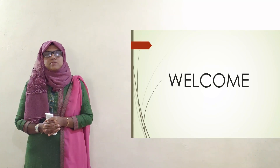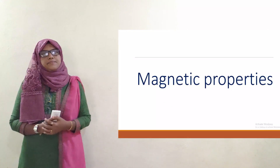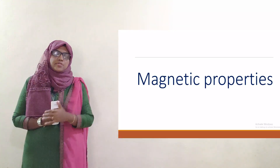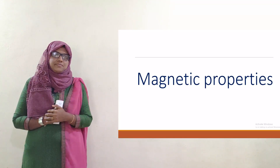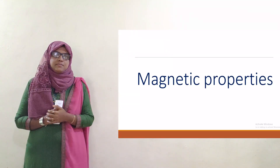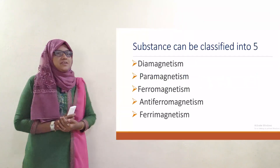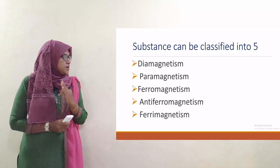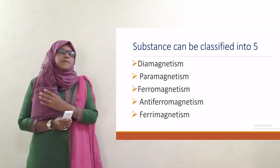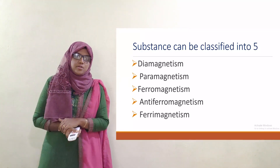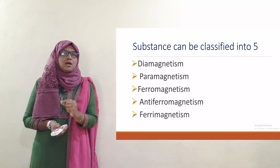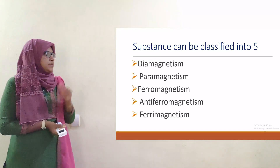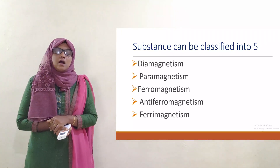Today we discuss the magnetic properties of solid. Based on the magnetic behavior, substances can be classified into five categories: diamagnetism, paramagnetism, ferromagnetism, anti-ferromagnetism, and ferrimagnetism.